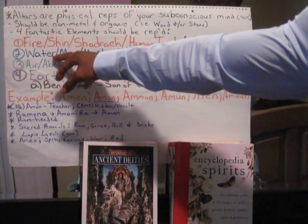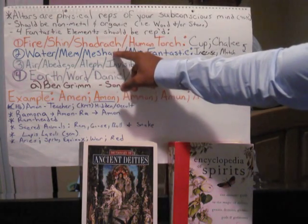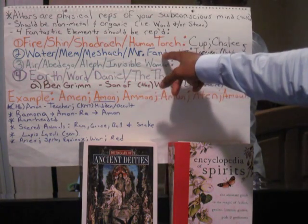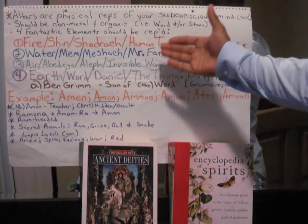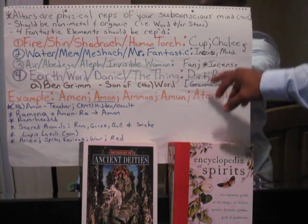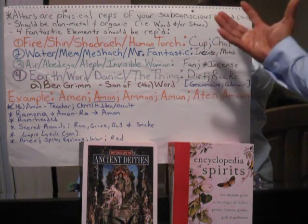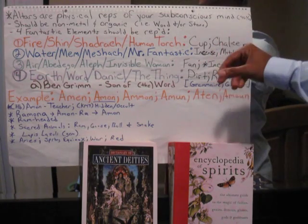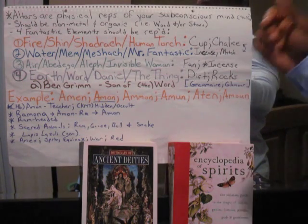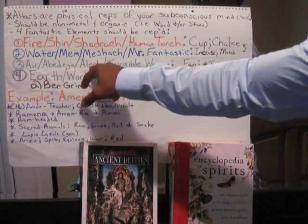The next element is water. The Hebrew letter is Mem, which means water — so that's Meshach. You have Shadrach, Meshach, and Abednego. In the Fantastic Four, that was Mr. Fantastic — he was flexible. He wasn't literally made of water, but they showed it the best they could: he's like a rubber man, malleable and flexible, like water. On your altar it can be a cup, a chalice, a bottle — something with water in it, or anything you subconsciously associate with water.